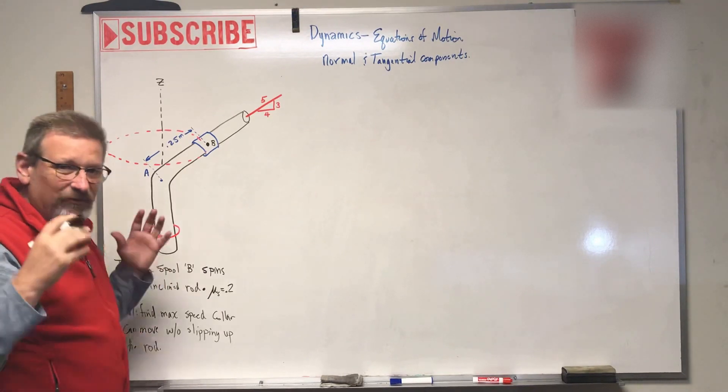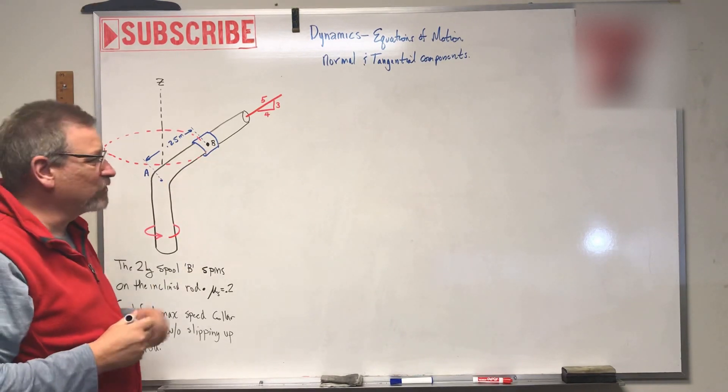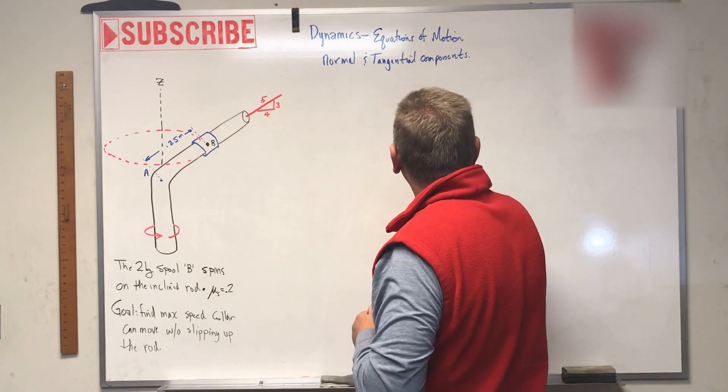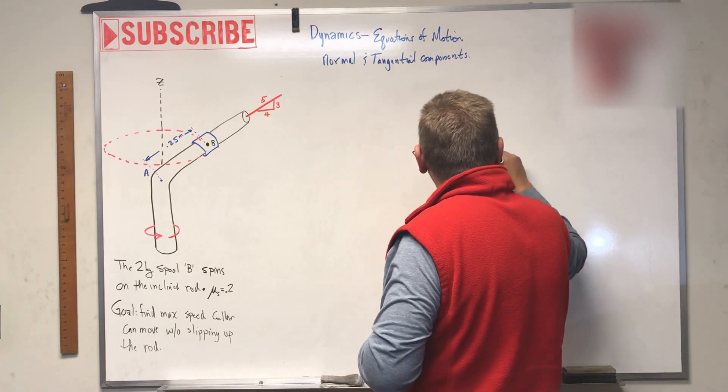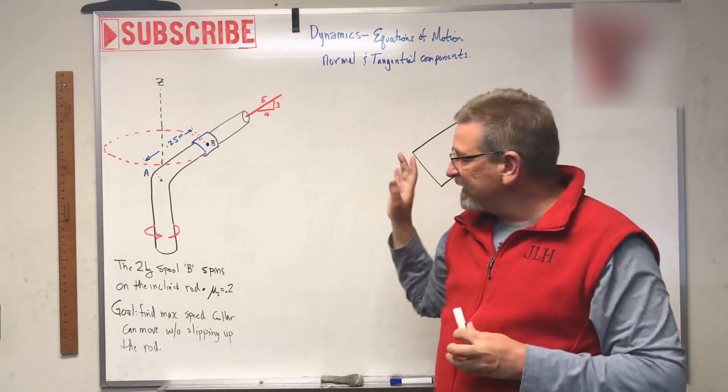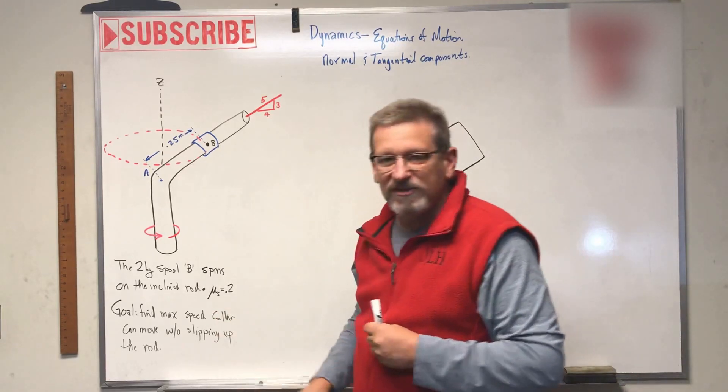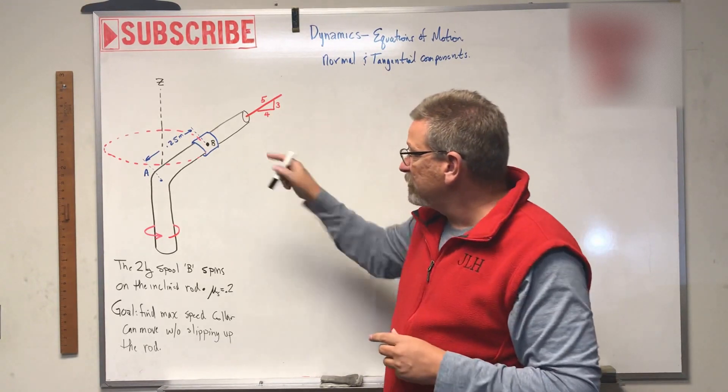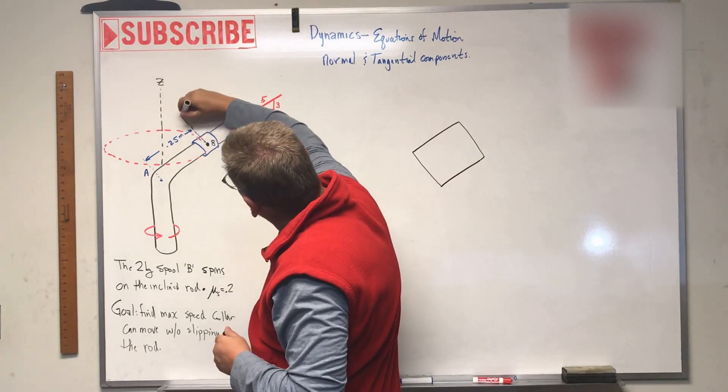I think the simplest way to do this is to look at the collar by itself. So let's go over here and let's draw a free body diagram of the collar. So here's the collar. Now let's talk real quick about our normal and tangential components. This thing is spinning with a constant speed. It's find the speed, the constant speed, which means there's no acceleration.